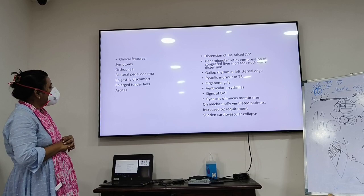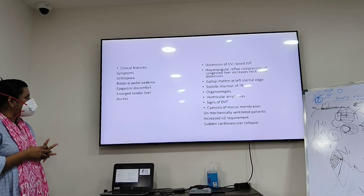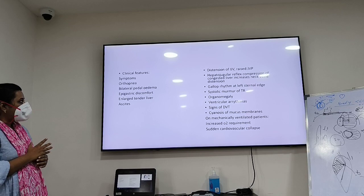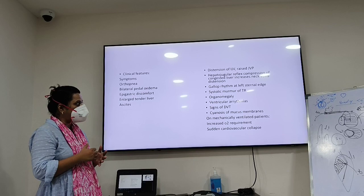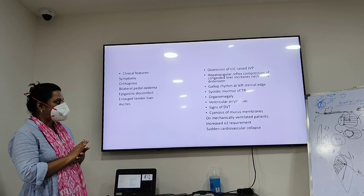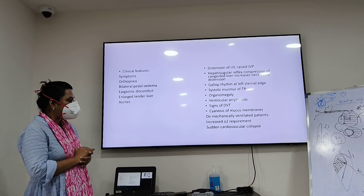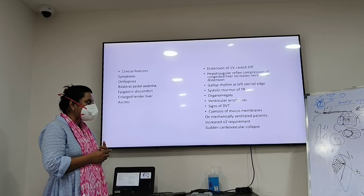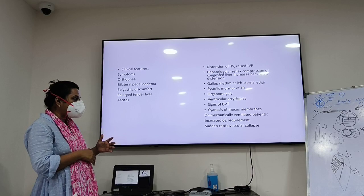Clinical features: symptoms include orthopnea, bilateral pedal edema, epigastric discomfort, and enlarged congested tender liver with ascites. Signs include raised JVP, elevated CVP, hepatojugular reflux, compression of congested liver causing neck vein distension, gallop rhythm at left sternal edge, systolic murmur of tricuspid regurgitation, organomegaly, ventricular arrhythmia, and cyanosis of mucous membranes. In mechanically ventilated patients: increased oxygen requirement and sudden cardiovascular collapse.